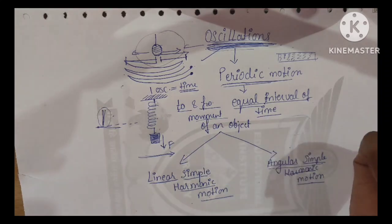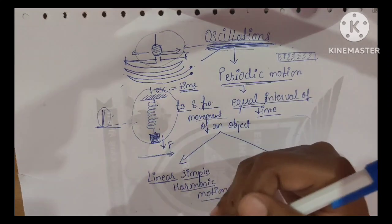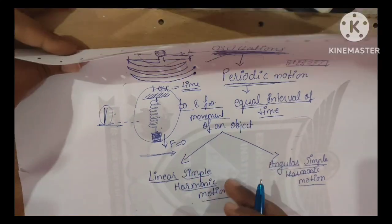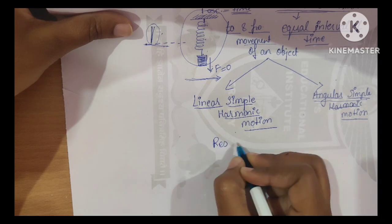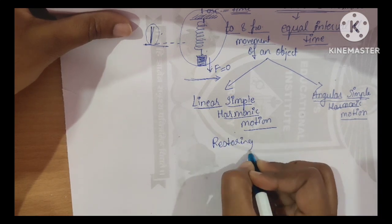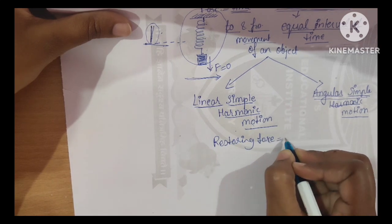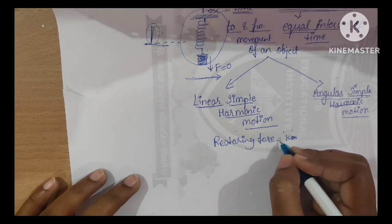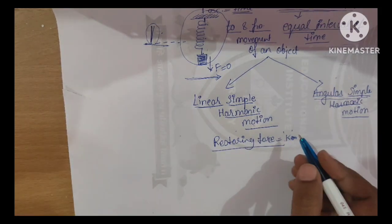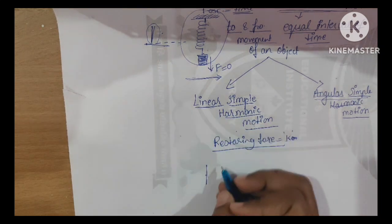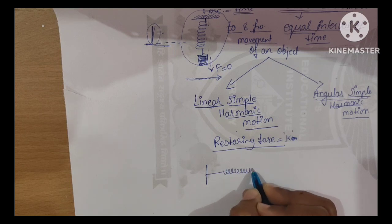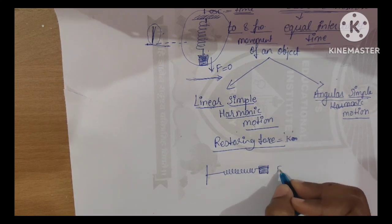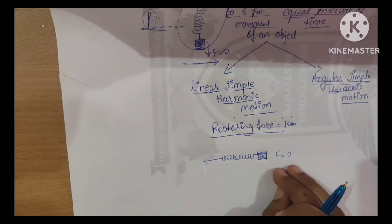Now let's take the spring-mass example. We will place a spring horizontally and attach a mass block to it. If no force is applied, this is the equilibrium stage. Now imagine you stretch the spring to the right side by a distance x. Physics always needs imagination — imagine you have stretched the spring.